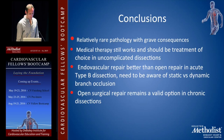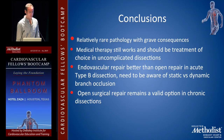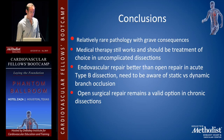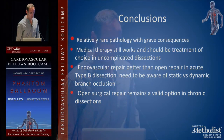In conclusion, this is a relatively rare pathology with grave consequences. Medical therapy still works and should be the treatment of choice in uncomplicated dissections. Endovascular repair is better than open repair in acute type B dissection, but you need to be aware of static versus dynamic branch occlusions or stenoses. Open surgical repair remains a valid option in chronic dissections.